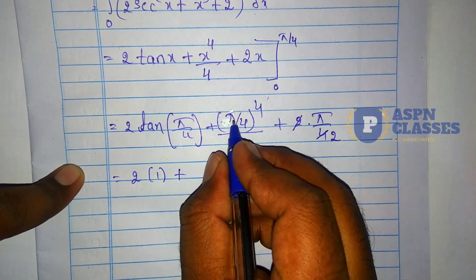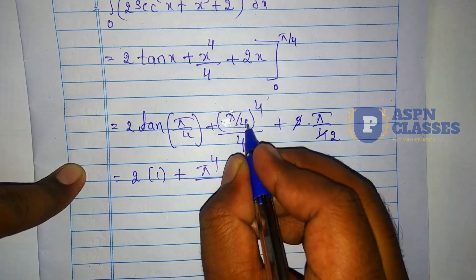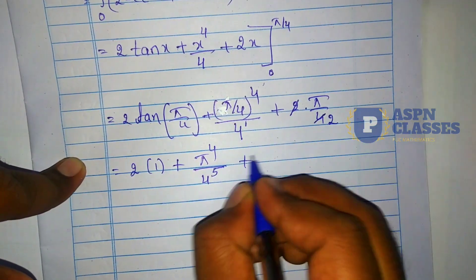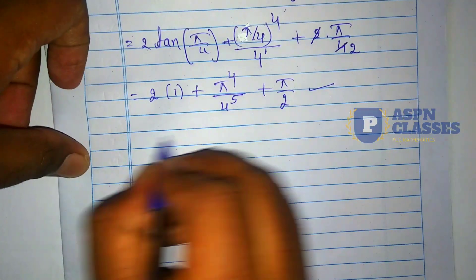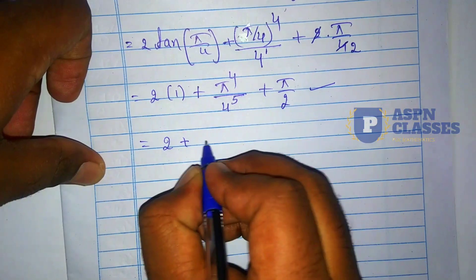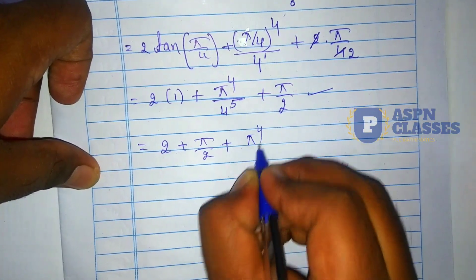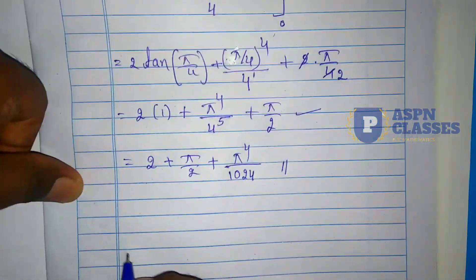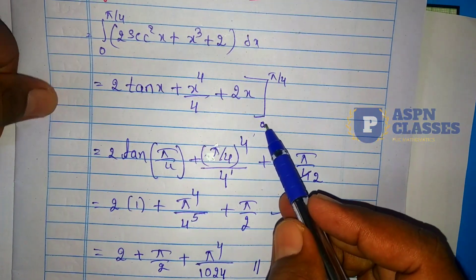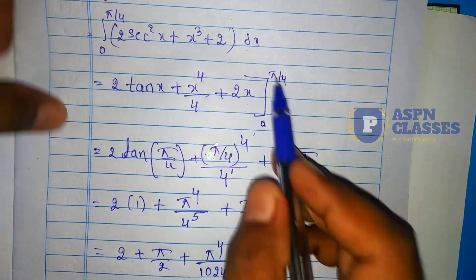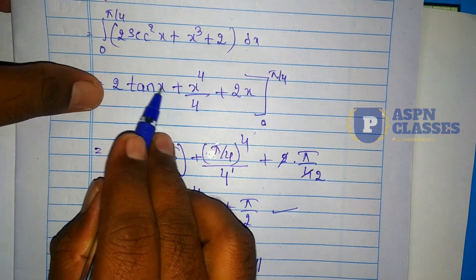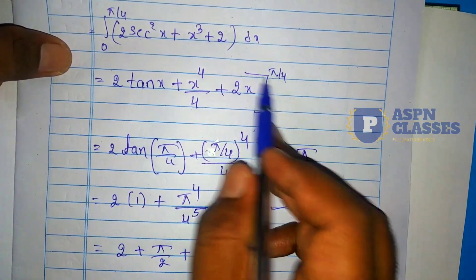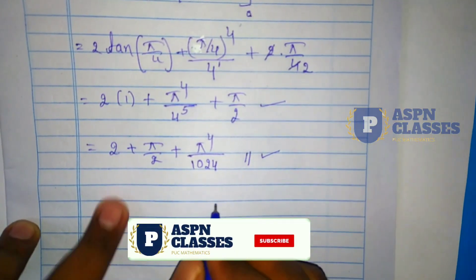Applying the upper limit π/4: we get 2·tan(π/4) plus (π/4)⁴ divided by 4, plus 2·(π/4). Then minus the lower limit 0 applied. tan(π/4) is 1, so 2·1 is 2. The π⁴ divided by 4⁵ is π⁴/1024. The lower limit gives 0. So the total answer simplifies to: 2 + π⁴/1024 + π/2.